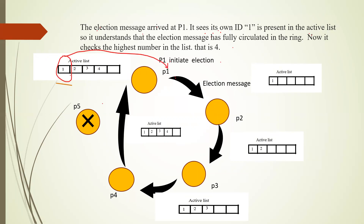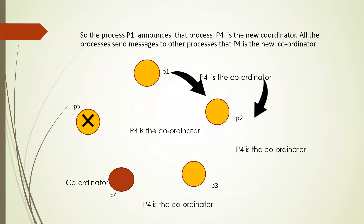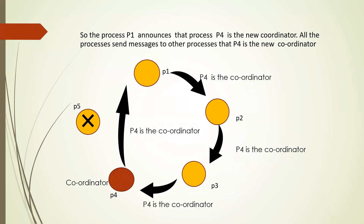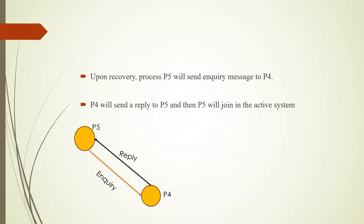P1 selects the highest number in the list, which is 4, so P4 will be the new coordinator. P1 announces that P4 is the new coordinator, and all processes send messages informing others that P4 is the new coordinator. Upon recovery, process P5 will send an inquiry message to coordinator P4, and P4 will respond so that P5 can rejoin the active system.